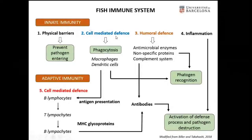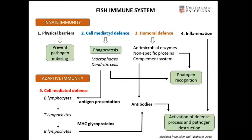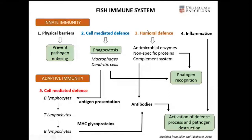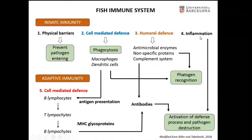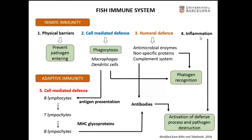The cell-mediated defense is formed by granulocytes, monocytes, macrophages, and other natural killer cells. The humoral defense is formed by a large number of elements, such as the complement system, HWKL, PEP enzymes, interleukins, etc. Inflammation is also considered an innate immune mechanism, which mediates the complex interaction of cellular and humoral compounds.